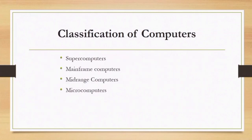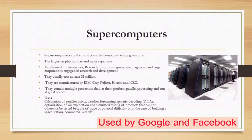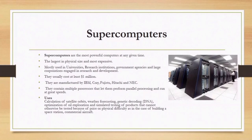You should also learn how to classify computers. We have four categories: supercomputers, mainframe computers, mid-range computers, and microcomputers. Supercomputers are the most powerful computers at any given time — the largest in physical size and most expensive. They are mostly used in universities, research institutions, government agencies, and large corporations engaged in research and development. They usually cost at least one million dollars and are manufactured by IBM, Cray, Fujitsu, Hitachi, and NEC.